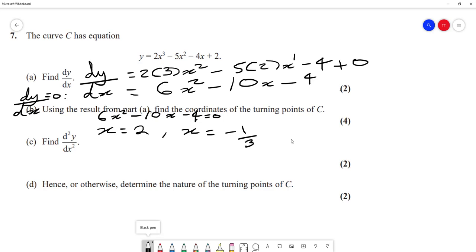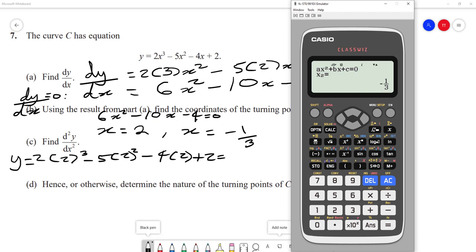Because we want the coordinates of C, we need to also work out the y-coordinates. So we substitute into the y equation: 2 times 2 cubed minus 5 times 2 squared minus 4 times 2 plus 2. Get a calculator out and type it straight in.